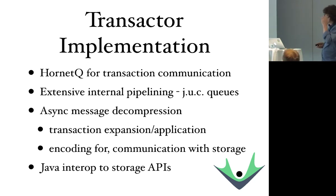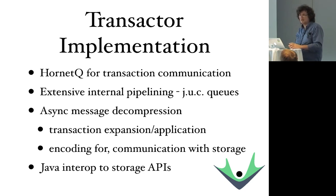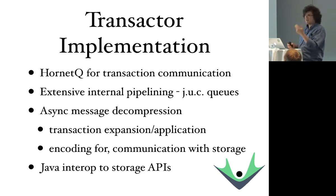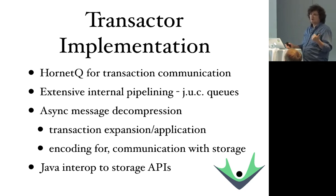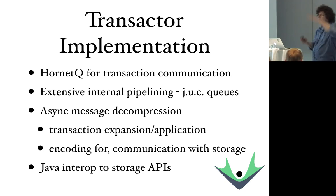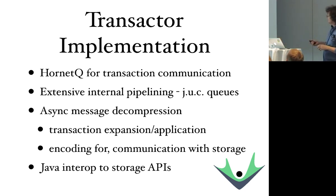Inside the transactional implementation, we use Hornet Queue for transaction communication. The internal structure of the transactor is highly pipelined. You can't make the transactor faster by doing transactions in parallel, but that doesn't mean you only use one core. You pipeline your architecture: there's a thread just expanding transactions, a thread applying transactions, a thread compressing applied transactions, a thread doing IO, and a thread doing acknowledgements. Now you're using all cores in your box efficiently, but still doing what's effectively a serial process with a lot of pipelining inside it. All the storage APIs we want to use have Java APIs, so we just use them.